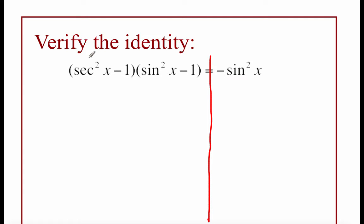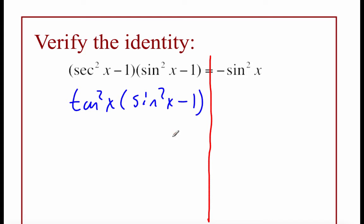Now I'm going to start looking at our identities. Focusing on secant squared of x minus one on the left-hand side — looking at our Pythagorean identities, we could replace that with tangent squared of x. Then we've got tangent squared of x times sine squared of x minus one. That's really close to one of our Pythagorean identities, but some of the signs are wrong — we have a positive sine and a negative one, but they need to be the opposite.